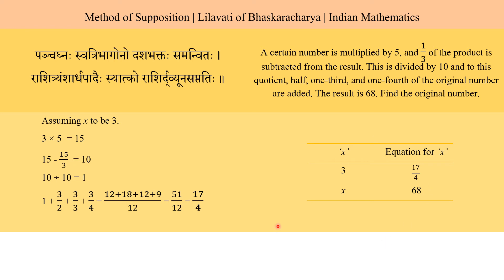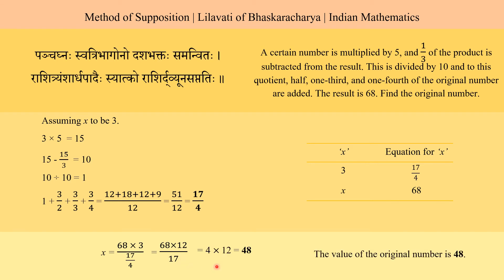From this table, we get the value of x to be 68 multiplied by 3 divided by (17/4). That becomes 68 multiplied by 12/17, which is 4 times 12, equals 48. Hence the value of the original number is 48.